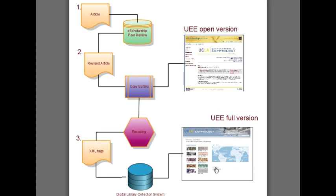This slide shows a simple workflow for the two different versions. An article starts in the open version, gets encoded and uploaded to the digital library system, then is turned into the full version. One of the goals was to integrate graduate students from Near Eastern Languages and Cultures into the workflow — we used their knowledge of Egyptology and trained them to help with encoding and creating metadata, which was another way of controlling costs.